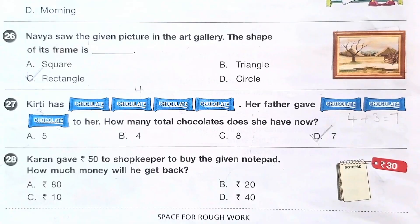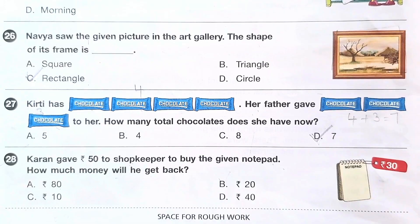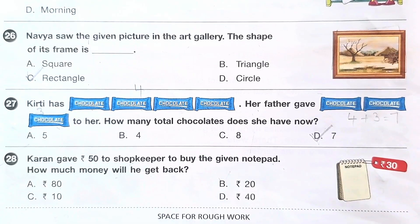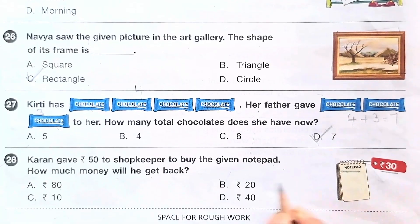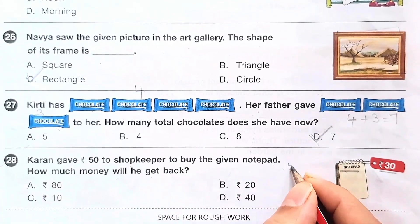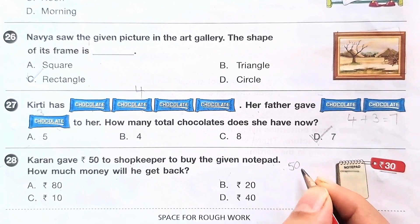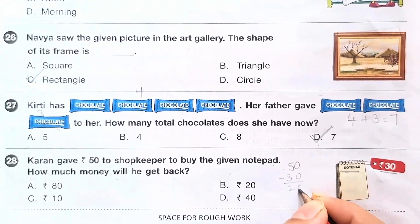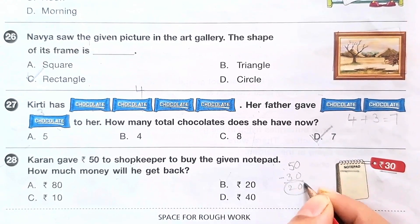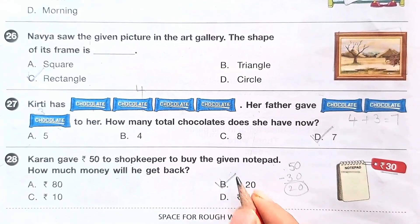Question number 28: Karan gave 50 rupees to the shopkeeper to buy a notepad. How much money will he get back? The cost of the notepad is 30 rupees but Karan gave 50 rupees, so he will get back 20 rupees. The answer is option B.